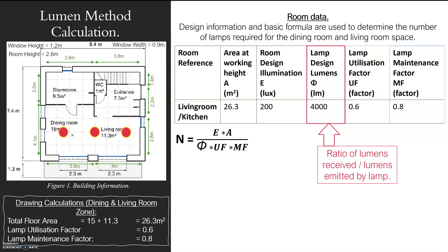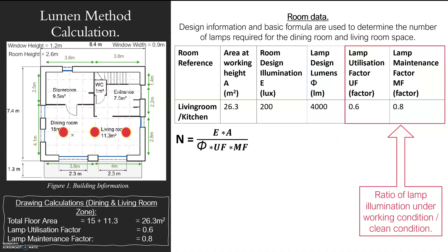Lamp design — this refers to the lights themselves. Once you know what lights you're getting, you can go to the manufacturer data and find the actual design lumens. From the manufacturer you can also find the utilisation factor and maintenance factor. Over the life of the lamp, the utilisation factor reflects how much light it will actually emit. With maintenance, consider whether dust will accumulate — if you're not cleaning it regularly, that will affect the amount of light it gives off.